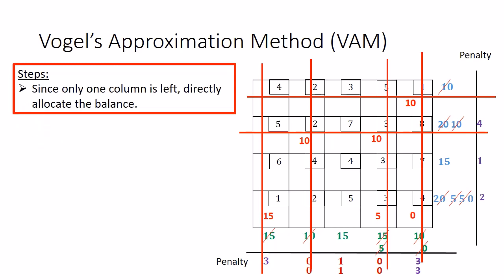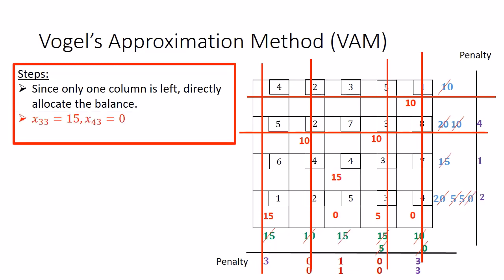Finally, when left with just one row or column, you don't need to follow any rule — you can't compute penalties here. Simply allocate whatever entries are written in front. In the third row, the supply is 15 units; in the fourth row, the supply is 0 units; and in the third column, the demand is 15. Since 15 plus 0 equals 15 and the problem is balanced, allocate 15 units to the third row and 0 units to the fourth row.